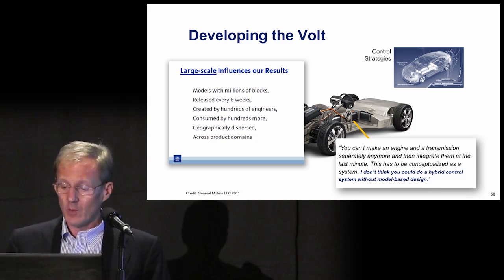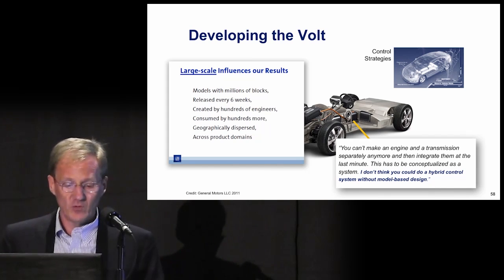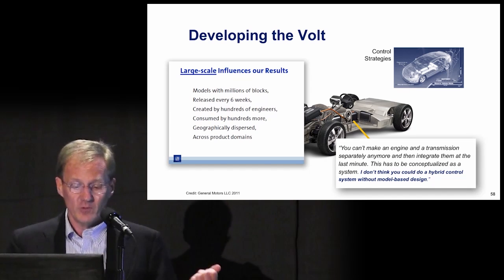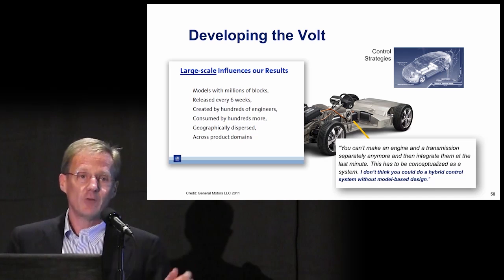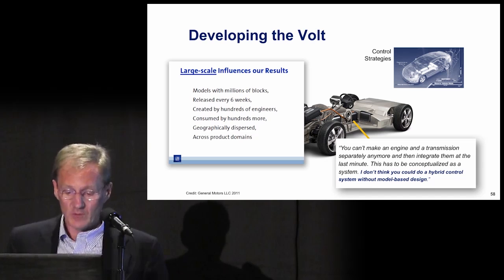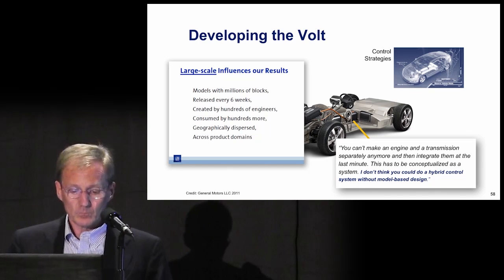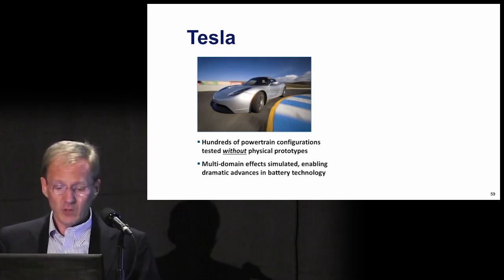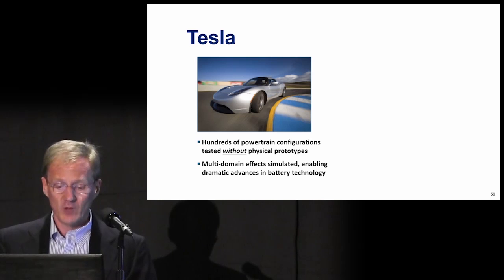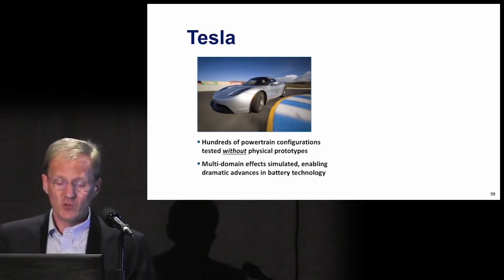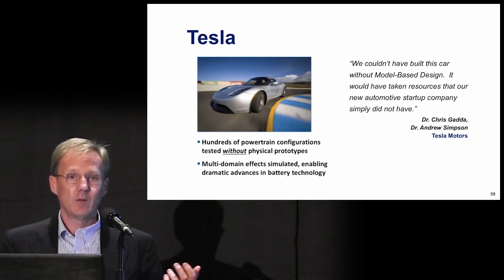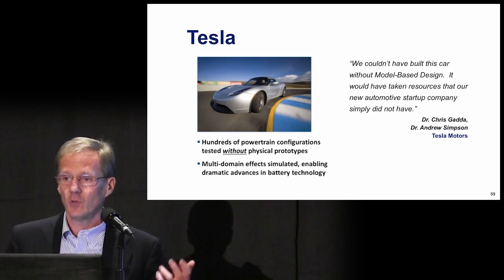Here's a slide from GM themselves talking about how they've scaled up model-based design. In building their cars, they have models with millions of blocks released every six weeks, with hundreds to thousands of engineers geographically dispersed around the globe. This type of design scales up pretty well. But small companies can use it too. Tesla, also in the automotive industry, simulated hundreds of powertrain configurations without physical prototypes. Model-based design was enabling a small company to build a car that just didn't have the resources to do it any other way.